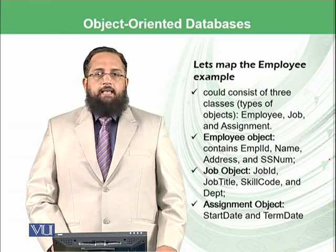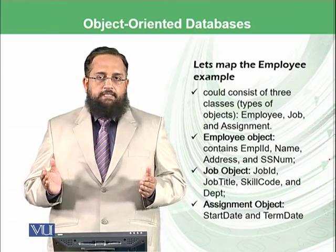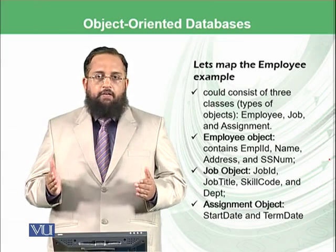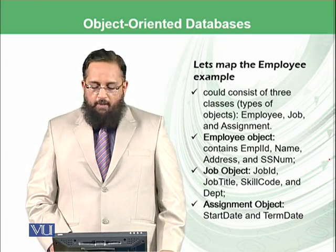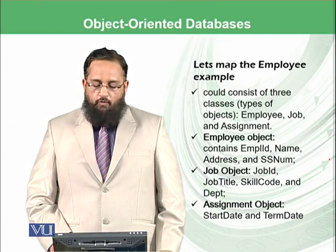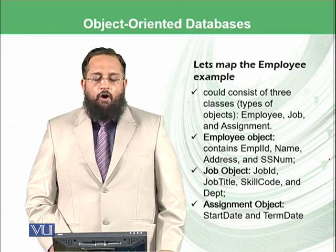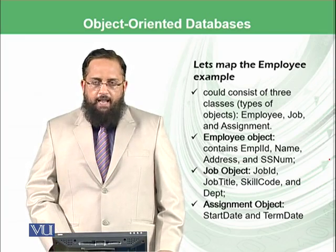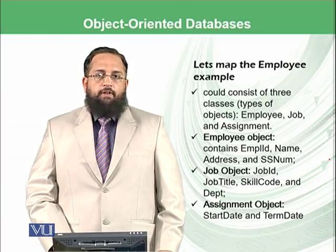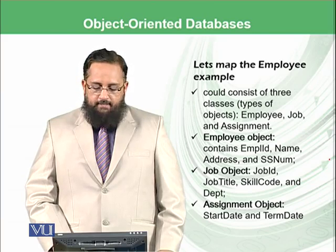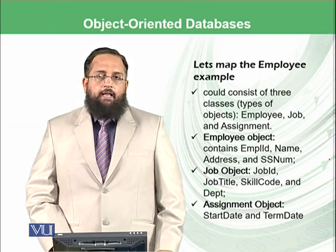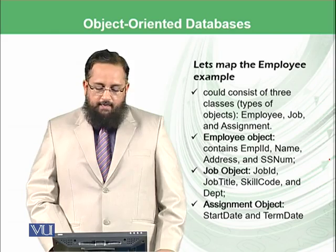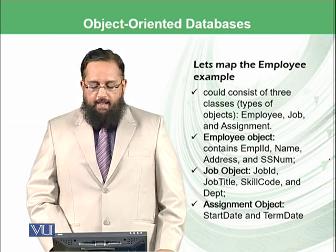Let's try to map the example of an employee, which we were discussing in the relational database model, involving employee, their assignment, and their jobs. We will have three types of objects. The employee object contains employee ID, name, address, and social security number. The job object contains job ID, job title, skill code, and the department in which the employee is working. And the assignment object contains the start date and the term date.